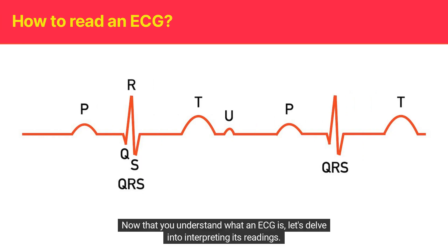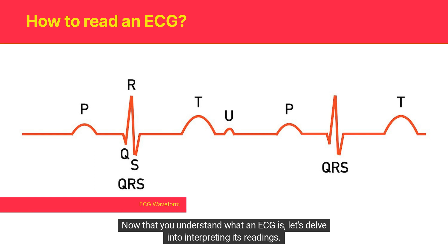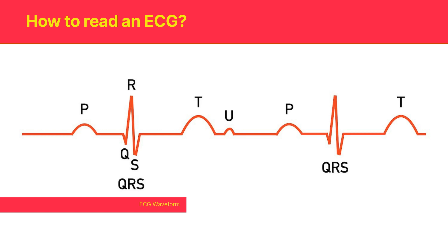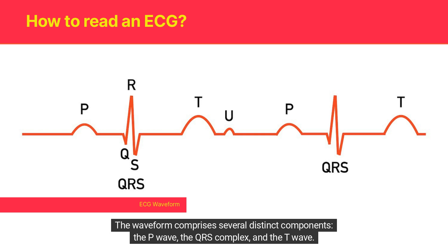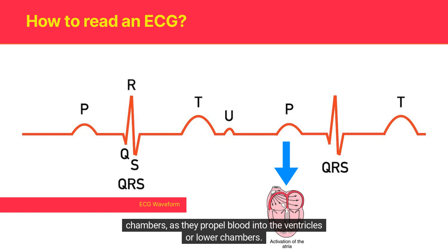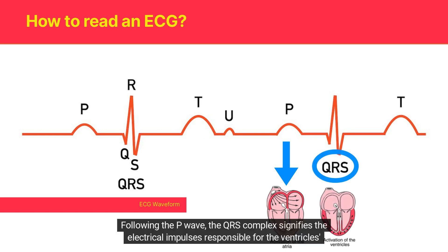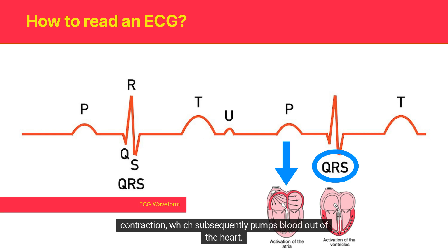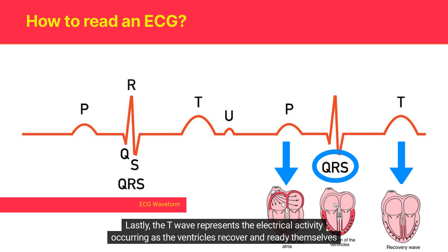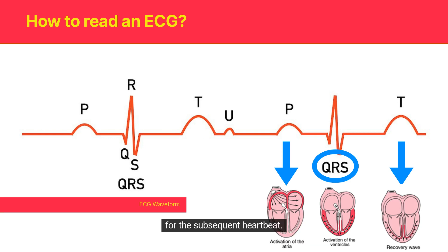Now that you understand what an ECG is, let's delve into interpreting its readings. The graph generated by an ECG, known as a waveform, displays the heart's electrical activity over time. The waveform comprises several distinct components: the P wave, the QRS complex, and the T wave. The P wave illustrates the electrical activity associated with the contraction of the atria — the heart's upper chambers — as they propel blood into the ventricles or lower chambers. Following the P wave, the QRS complex signifies the electrical impulses responsible for the ventricles' contraction, which subsequently pumps blood out of the heart. Lastly, the T wave represents the electrical activity occurring as the ventricles recover and ready themselves for the subsequent heartbeat.